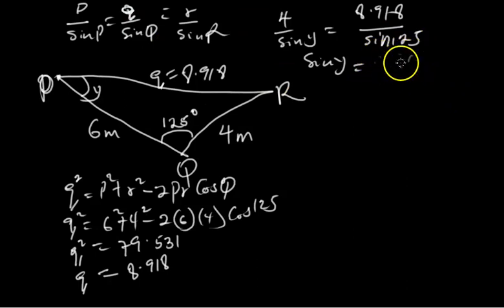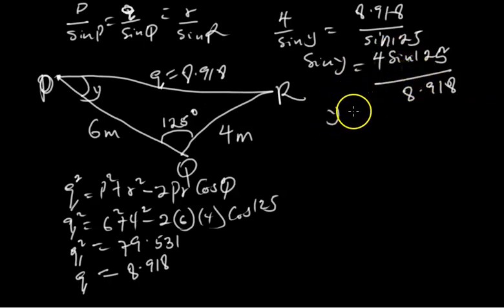If we cross-multiply, sine Y will be equals to 4 times sine 125 over 8.918. Now, if you take the sine inverse, if you multiply this out and take the sine inverse, you discover that your Y will be equals to 21.6 degrees.